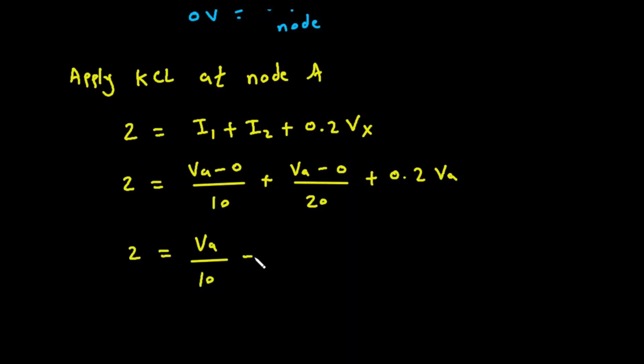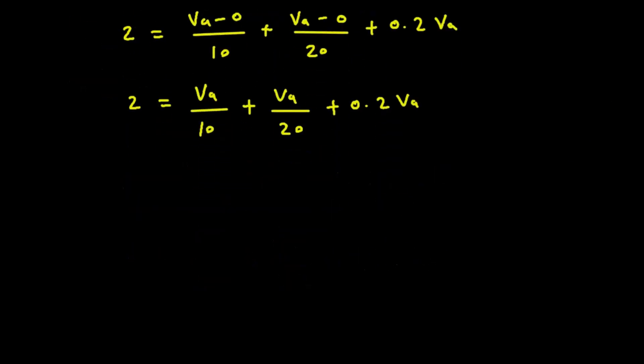Now let's take Va common. So 2 equals Va in bracket, 1 upon 10 plus 1 upon 20 plus 0.2. Now let's solve this, if we solve this it will be 1 upon 10 plus 1 upon 20 plus 0.2.